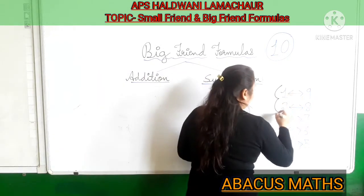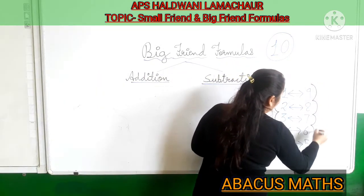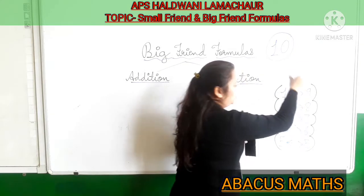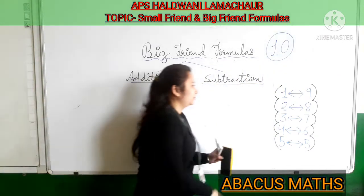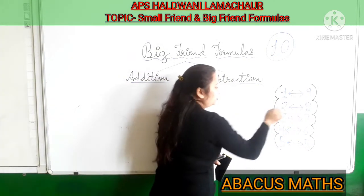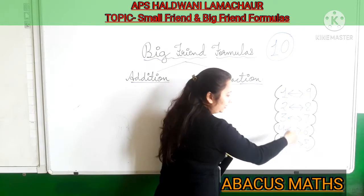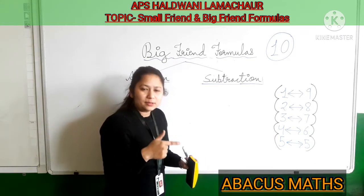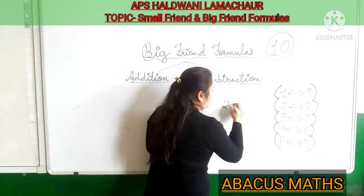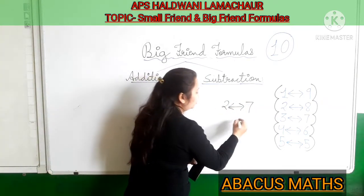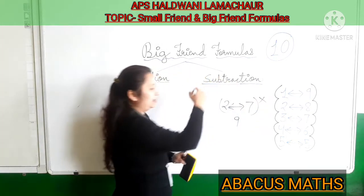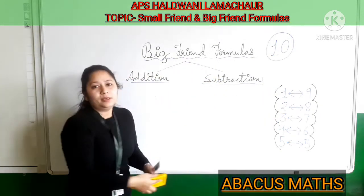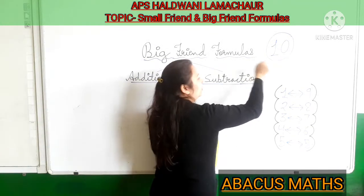You might think it is very tough to learn these Big Friends, but it is very easy. Whenever you add these both numbers it will always give 10: 9 plus 1 is 10, 8 plus 2 is 10, 7 plus 3 is 10, 6 plus 4 is 10, 5 plus 5 is 10. Whenever you add both of these numbers it will always give 10. So the combination of these numbers always gives 10, and this way you can learn these friends very easily.